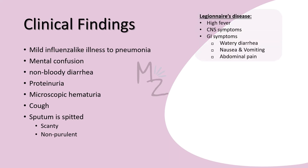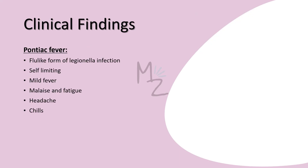Legionnaires' disease presents with high fever, CNS symptoms like mental confusion, and GI symptoms like watery diarrhea, nausea, vomiting, and abdominal pain. Pontiac fever is a flu-like, self-limiting form of Legionella infection that presents with mild fever, malaise, fatigue, headache, and chills.